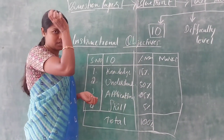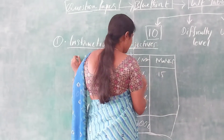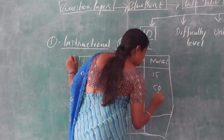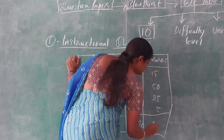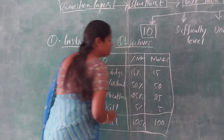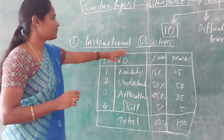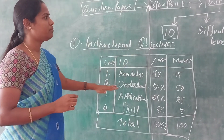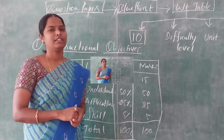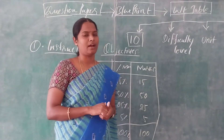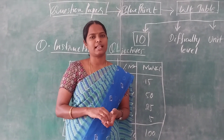Suppose you are writing question papers for one hundred marks: then you give fifteen marks for knowledge, fifty marks for understanding, twenty-three marks for application, and five marks for skill, totaling one hundred marks. This is how we have to prepare the table of specifications for instructional objectives. This table will be used in the preparation of the blueprint. For the remaining three variables and how to prepare their tables, we will see in our next video.